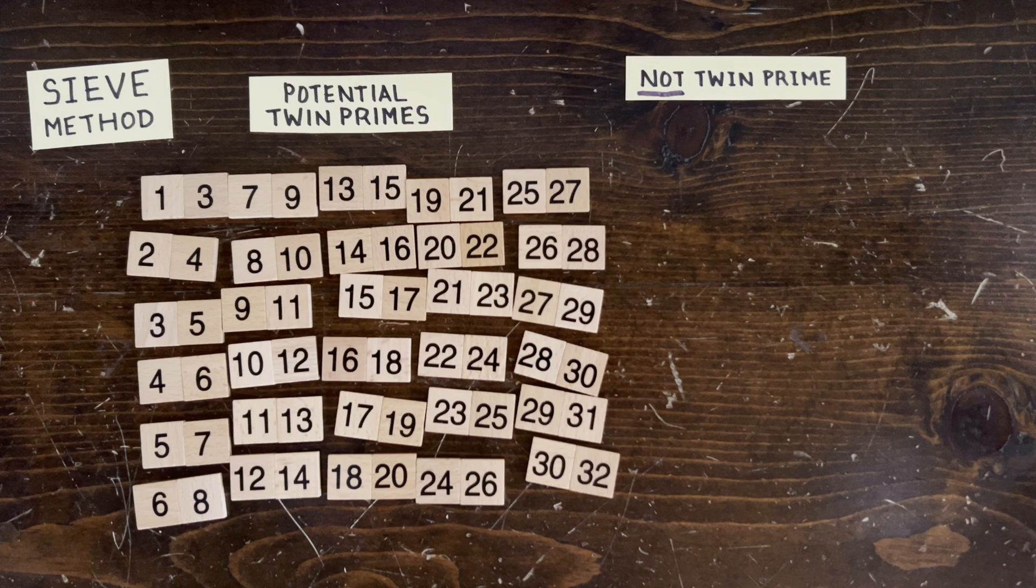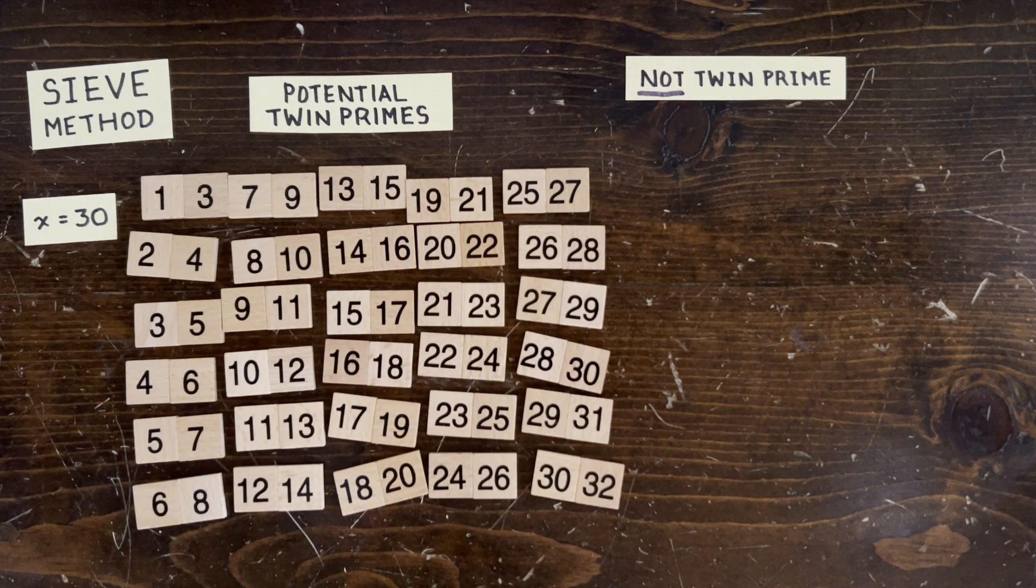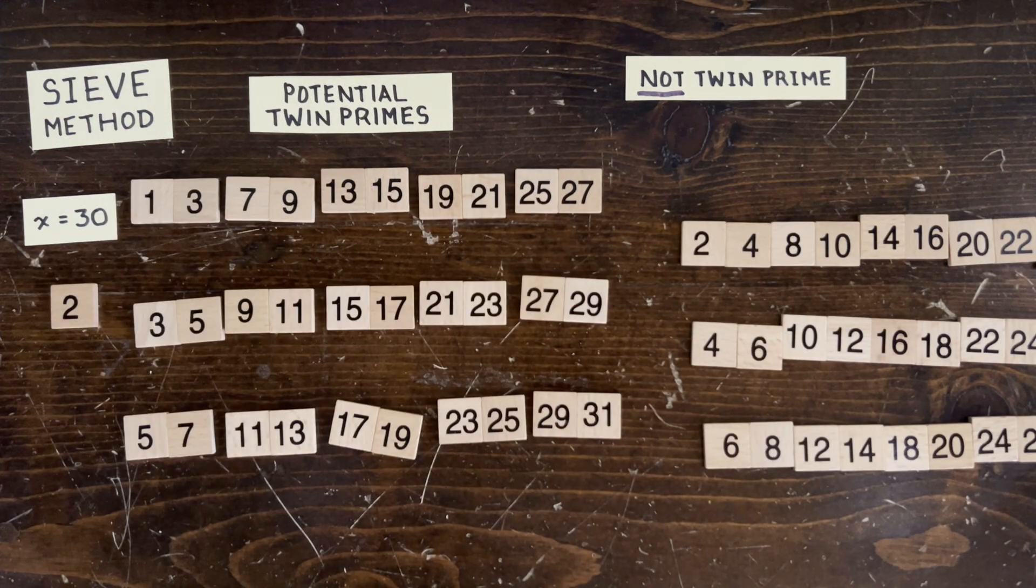Math: Potential Twin Primes up to X. We're going to gradually sieve these out to the not-twin-prime category and see what's left. First, sieve with prime 2. Okay, that's going to remove half the candidates right there.